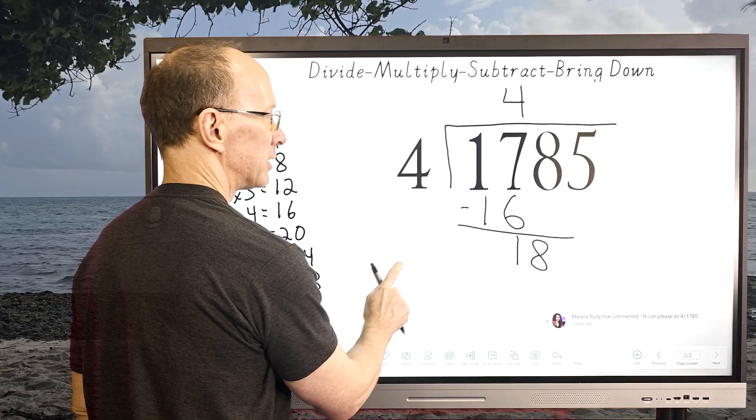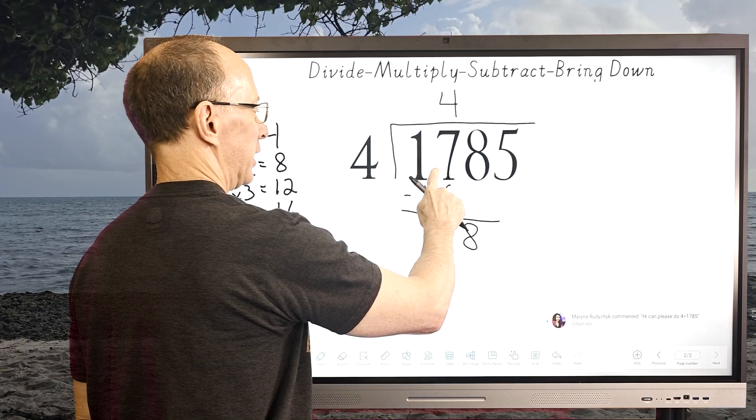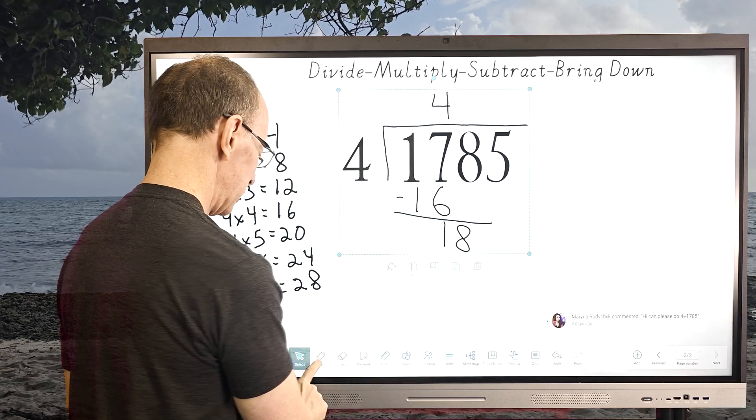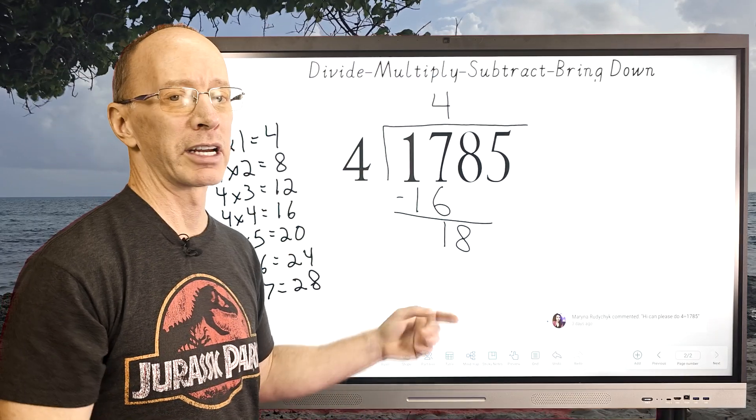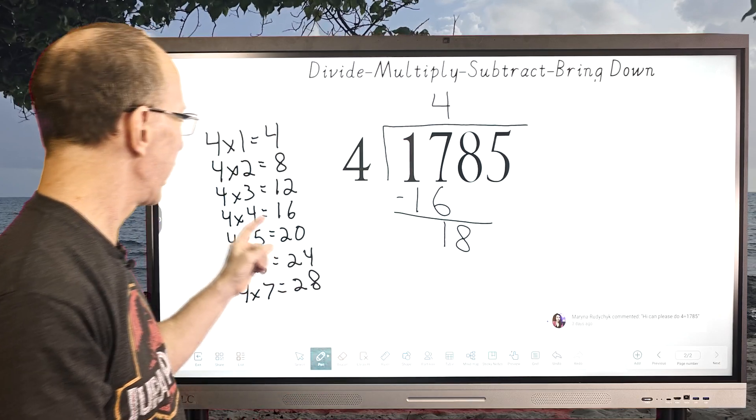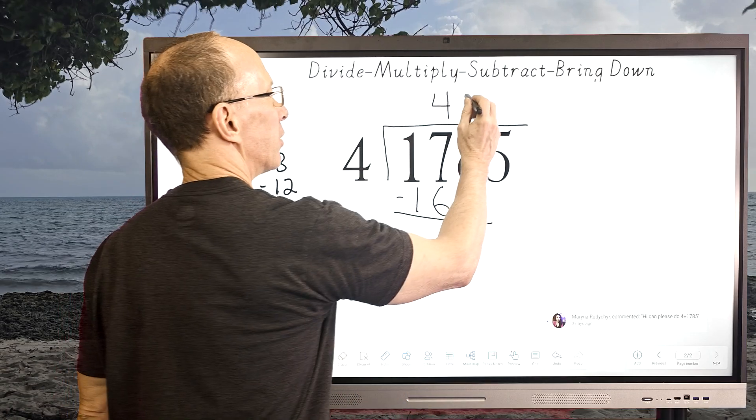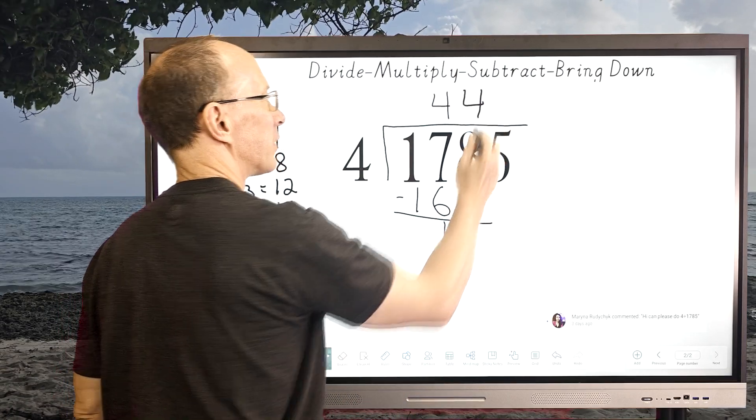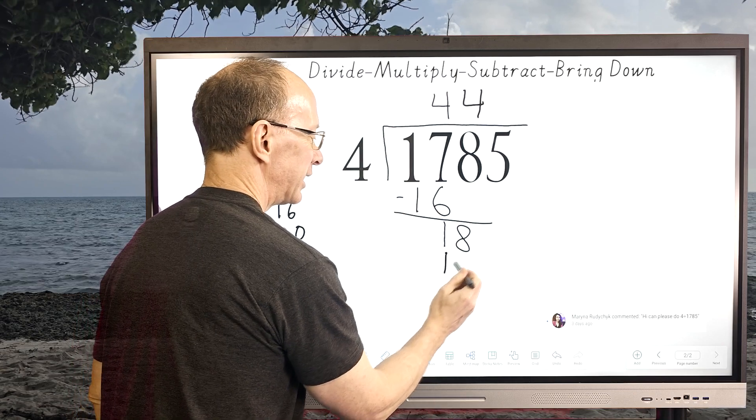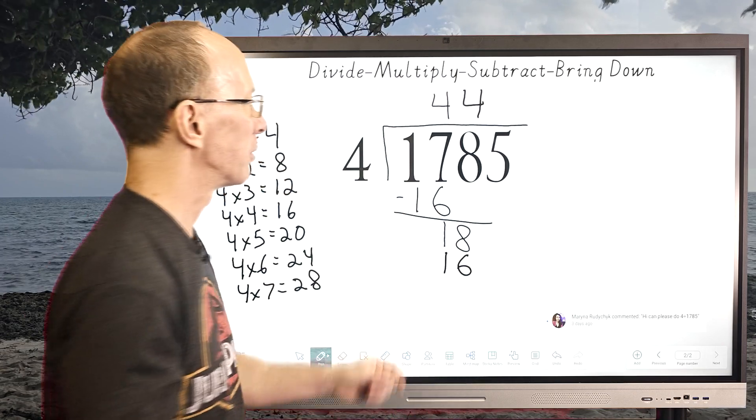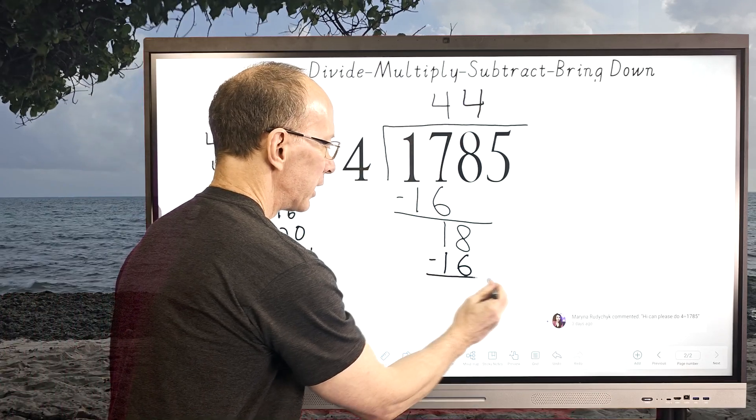I just kind of sized that a little bit there, bring that over here for you. And now we can begin again. So how many times can I put 4 into 18? We're going to divide right now, so I can go again 4 times 4. I'm going to go ahead and write the 4 right here and then multiply, so 4 times 4 equals 16.